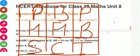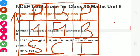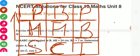Using that mnemonic, we make the formulas. Sin is equal to perpendicular by hypotenuse. C means cos — cos formula is base by hypotenuse. Tan is perpendicular by base. These are the three primary trigonometric ratios.